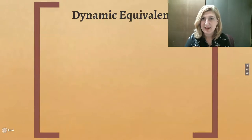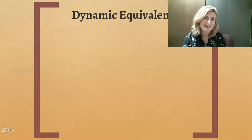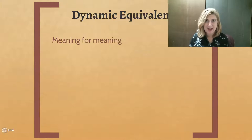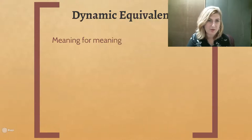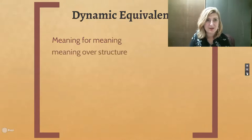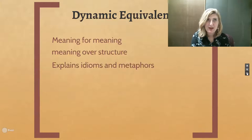Another thing you can do as a translator instead of formal correspondence is dynamic equivalence, where you translate meaning for meaning instead of word for word. Instead of translating 'bow in the sky,' you're going to say 'rainbow in the sky.' Instead of a weird sentence structure where the verb is first, you're going to translate that out to try to make it easier to understand. The whole idea of dynamic equivalence is to make the text easier for your audience to understand.